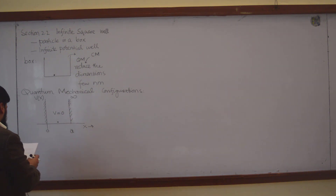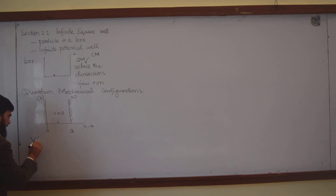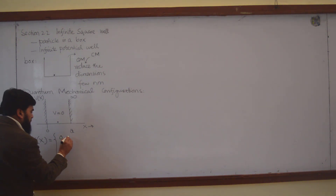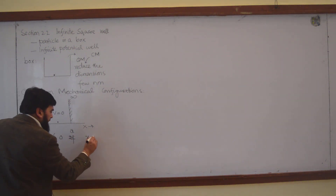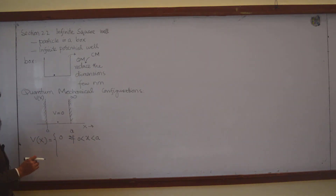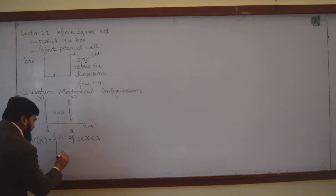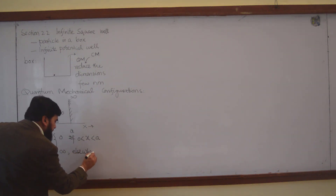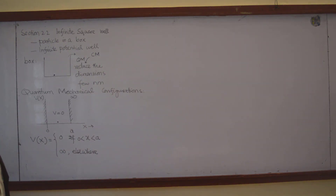Under this configuration we will now solve the Schrödinger wave equation. We write the potential as: V = 0 for 0 < x < a, and V = infinity elsewhere (otherwise). Now we will solve the Schrödinger wave equation.